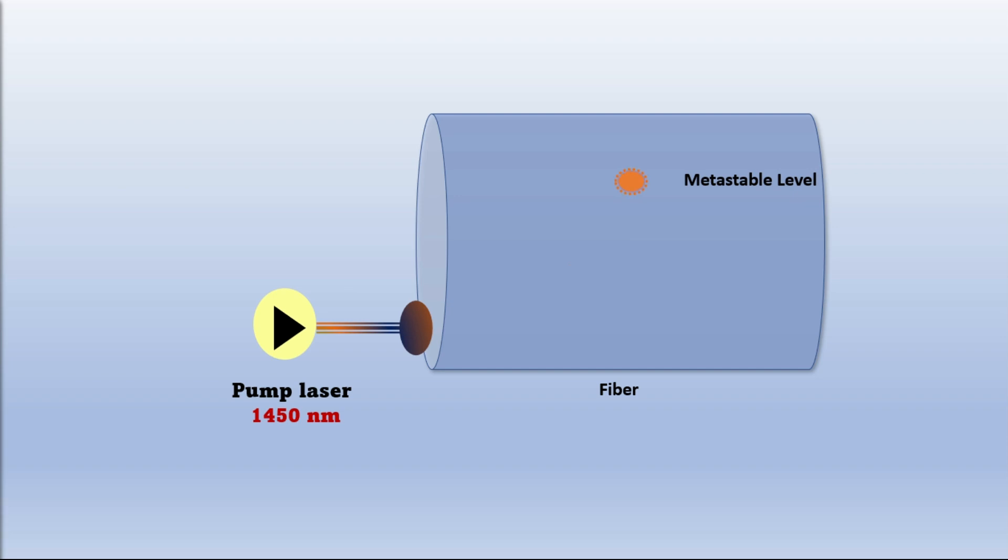The remaining energy from the intermediate level to ground level is dissipated as molecular vibrations, phonons, in the fiber. Signal carrying data absorbs this energy. The result is amplification.